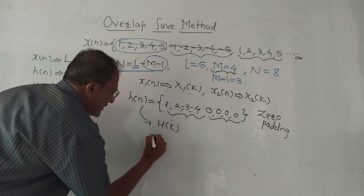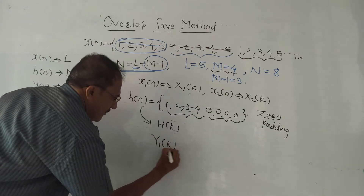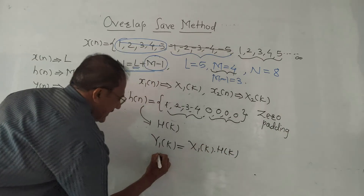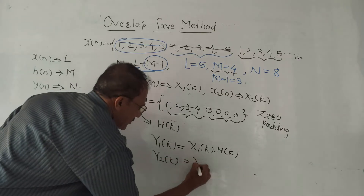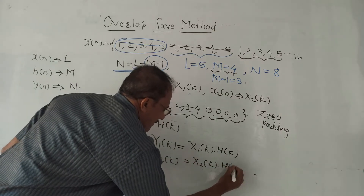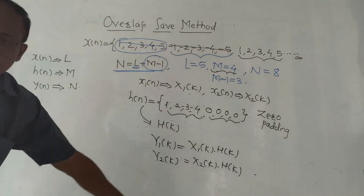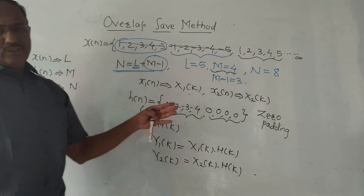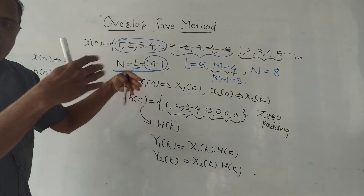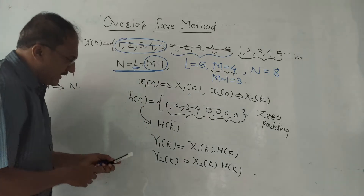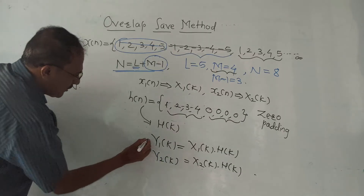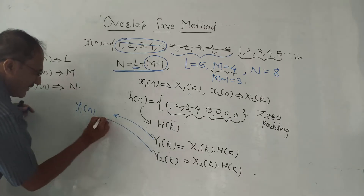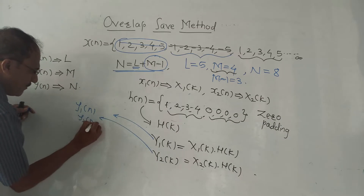Next, multiply in the frequency domain. The first output block is Y1(k) = X1(k) × H(k), the second output block is Y2(k) = X2(k) × H(k), and so on. Since the end user wants results in the normal domain, calculate the IDFT of each output block. Inverse DFT of Y1(k) gives Y1(n), inverse DFT of Y2(k) gives Y2(n), and so on.